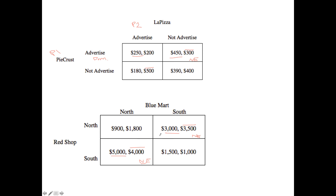This is a pretty straightforward game overall. They could also include some sort of subsidy or additional expense. For example, if stores were to locate in the North, there might be an extra tax of 450. In that case, the top-left box would become 450, this would become 1,350, and the box where only Red went North would be 3,550, while the other would remain 3,500.